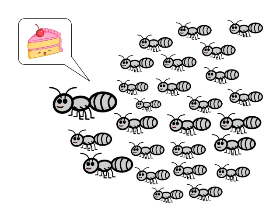The more ants follow a given trail, the more attractive this trail becomes to be followed by other ants. This process can be described as a loop of positive feedback, in which the probability that an ant chooses a path is proportional to the number of ants that have already passed by that path.